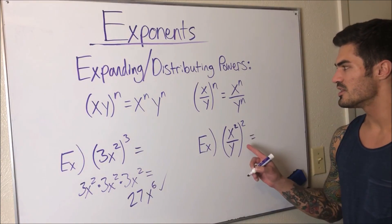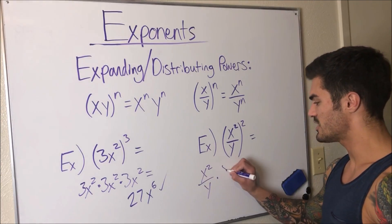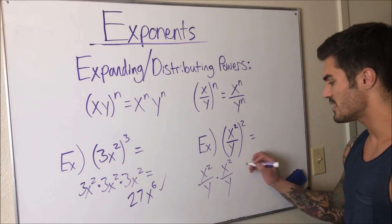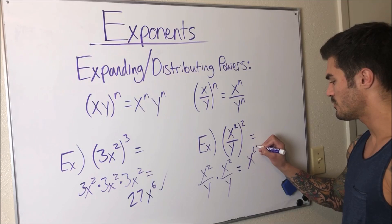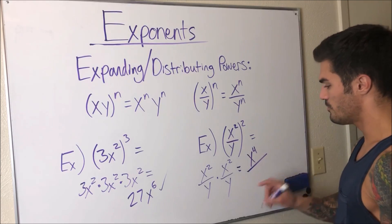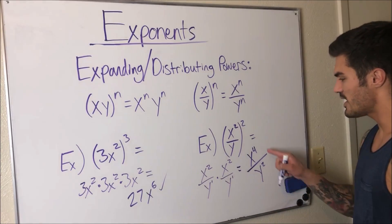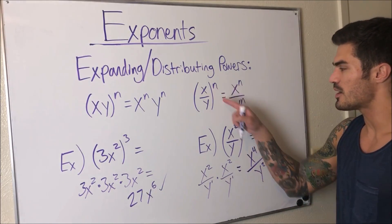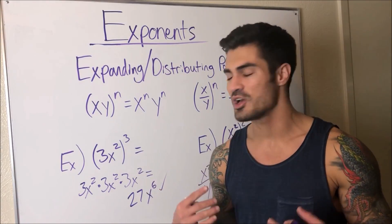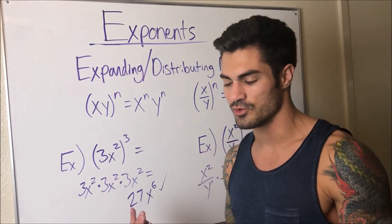The same idea applies to quotients: (x²/y)² means x²/y times x²/y. Multiplying across: x² times x² gives x⁴, and y times y gives y². So the result is x⁴/y². This matches what the distribution rule gives. If you ever forget the rules, you can always write everything out — but for something like the eighth power, it's good to intuitively know how these rules work.